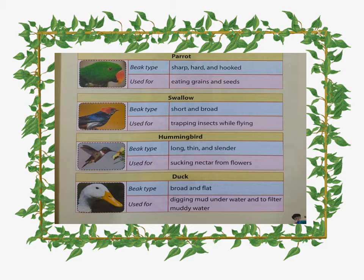Next is the hummingbird — the smallest bird. Its beak is long, thin, and slender, used for sucking nectar from flowers. Next is the duck. The beak of the duck is broad and flat, used for digging in mud underwater and to filter muddy water to catch insects.